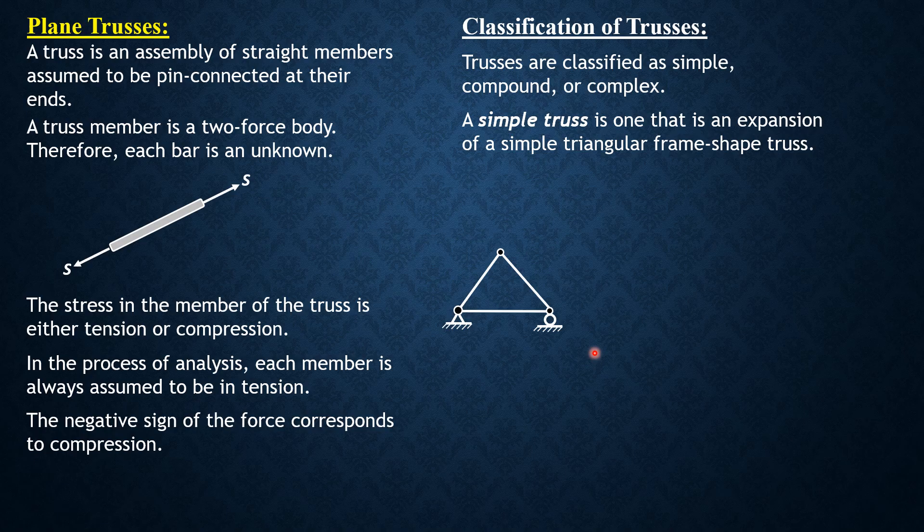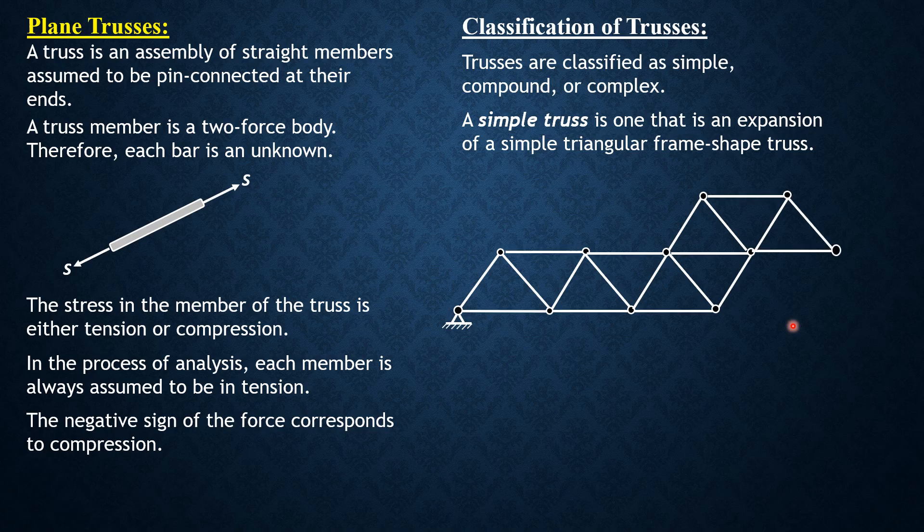Two members added, then another joint. Two members added, another joint, and so on and so forth until such time that you end. Then you put the support to be stable, a roller support to be determinate. Then this truss is still classified as simple.